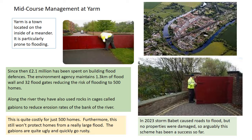They've also lined the river banks in places with rock cages called gabions. The negative is that it's quite a costly scheme for just 500 homes, and they won't protect the homes if there's a really large flood. The gabions are also quite ugly and quickly go rusty. The scheme was put to its test in 2023 when Storm Babbitt hit, leading to roads flooding but no properties were damaged — so arguably the scheme has been a success so far.